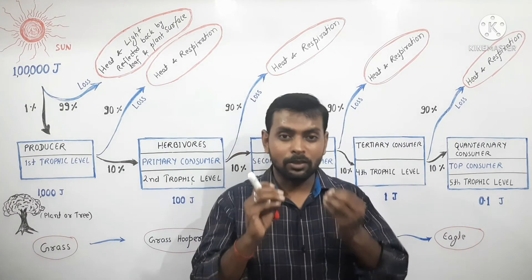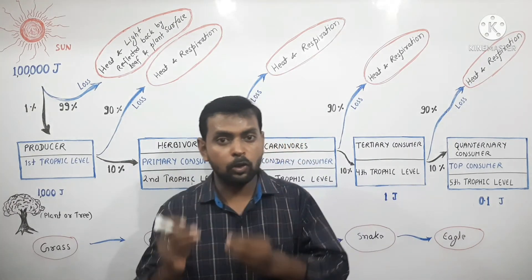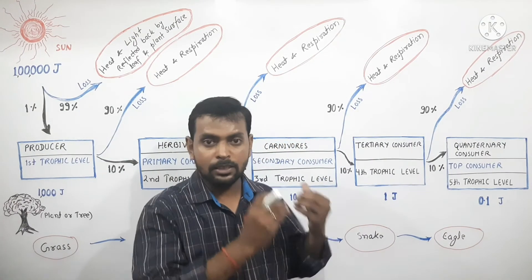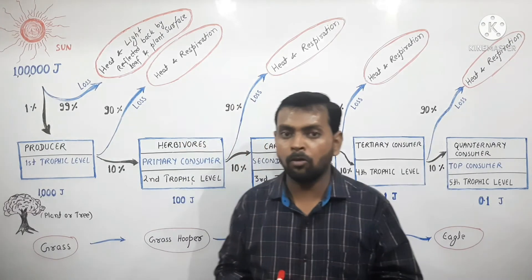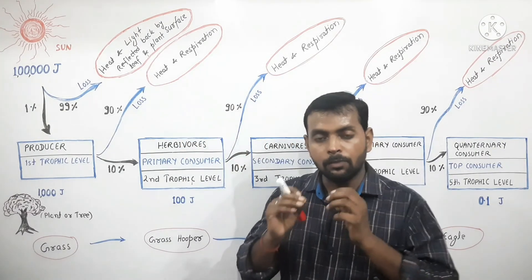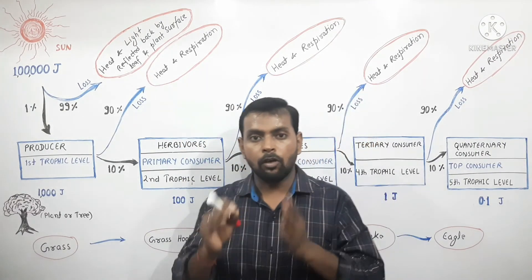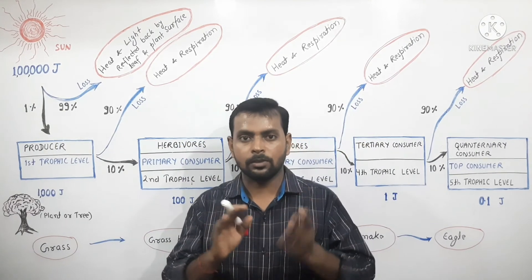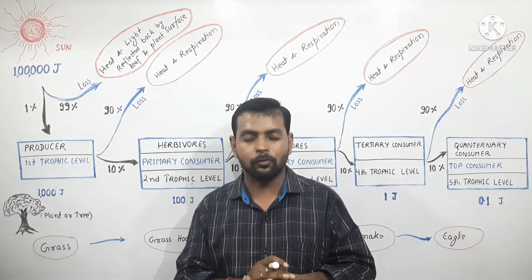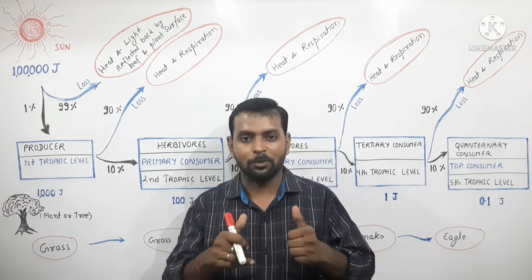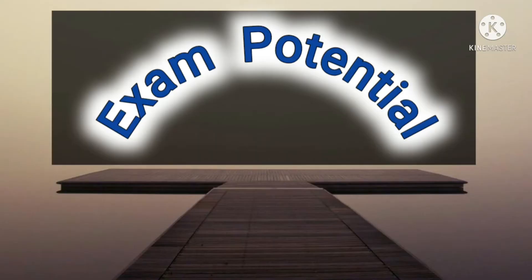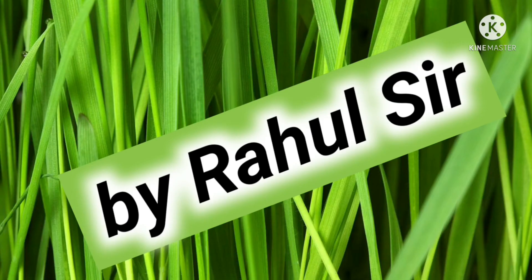Since during the whole process only 10% energy flows to the next higher trophic level, and this 10% energy is only utilized by the next higher trophic level to form their flesh, this law is known as the 10% law of energy flow. I hope you understood the whole topic. Thank you for watching this video tutorial — please subscribe for more videos.